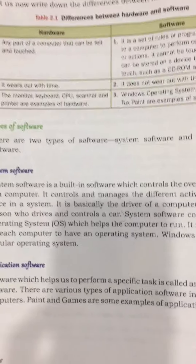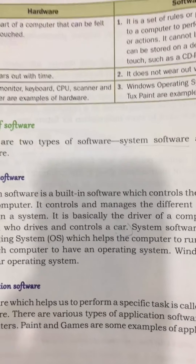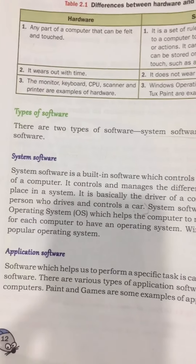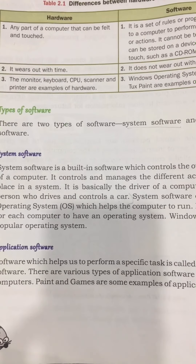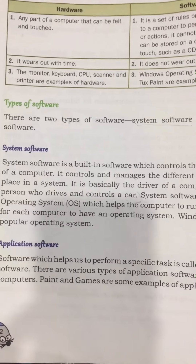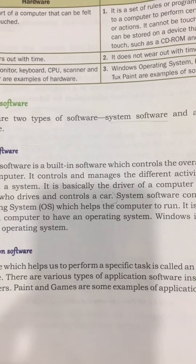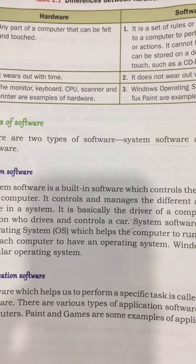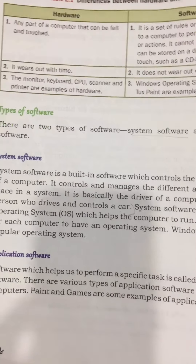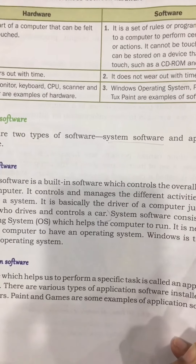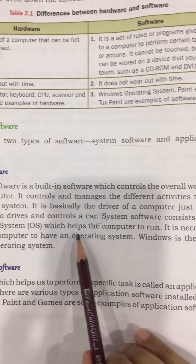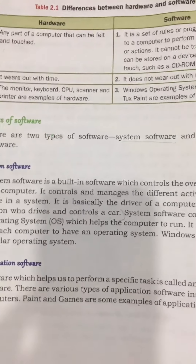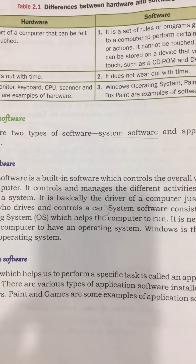If we don't install Windows in any computer, our computer will not start or run. It is like a driver of a car — the car can't run automatically. System software, which is necessary to install, is like Windows; without it there is no computer running. System software consists of an operating system which allows the computer to run.